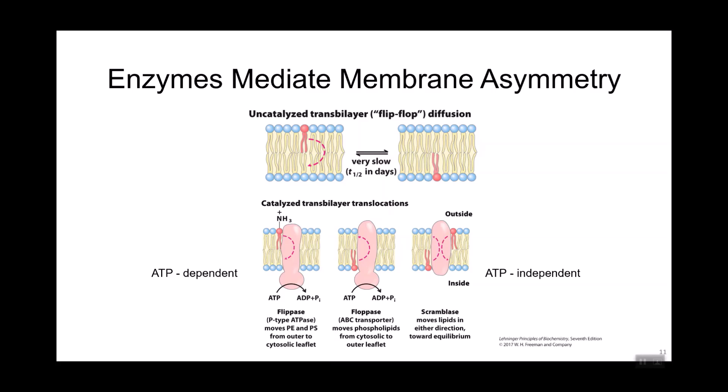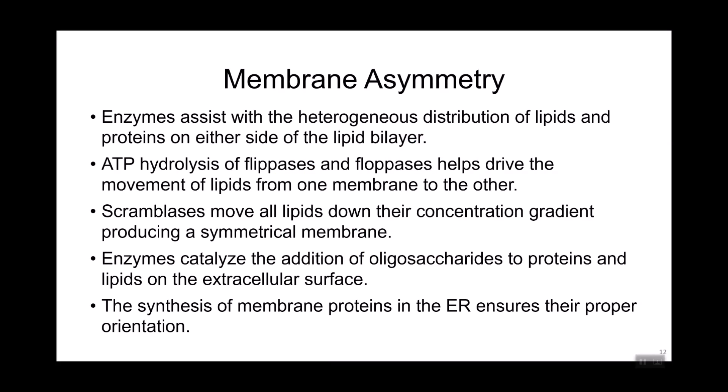It's really the expression of which of these enzymes are present that determines what lipids will be found in which of the two leaflets of a membrane. Enzymes that use ATP hydrolysis move lipids from one side to the other, while scramblases move lipids based on a concentration gradient. Enzymes also catalyze the addition of sugar chains to proteins or lipids, which are then generally found on the extracellular surface. The synthesis of membrane proteins in the ER also ensures their proper orientation.